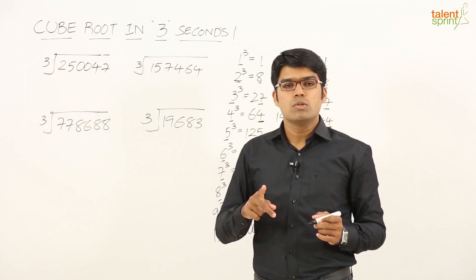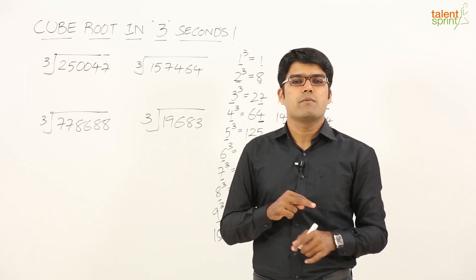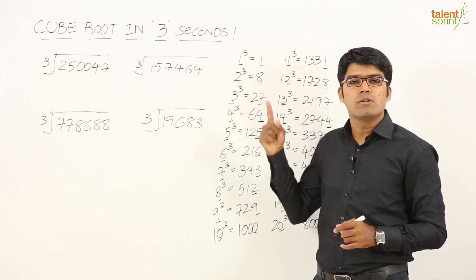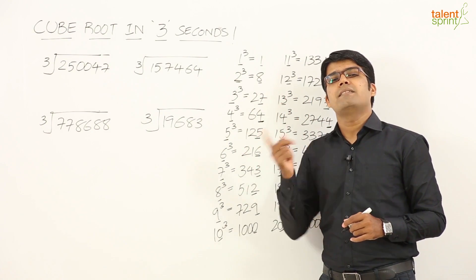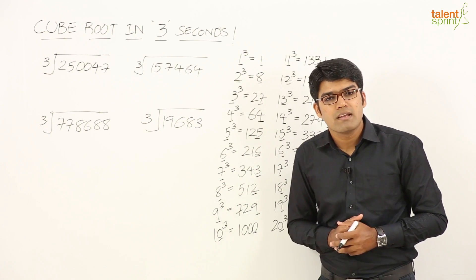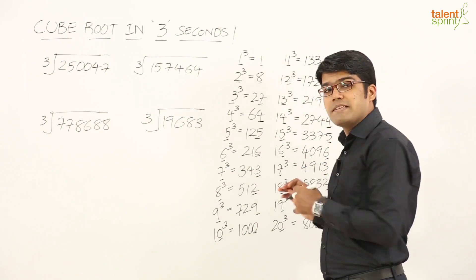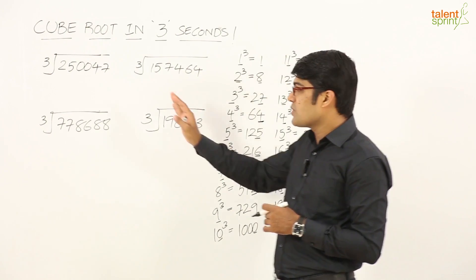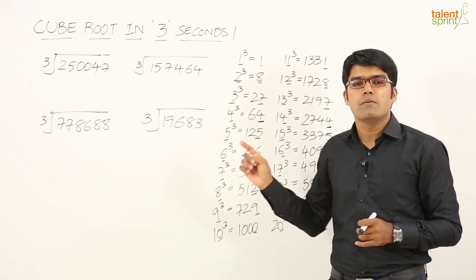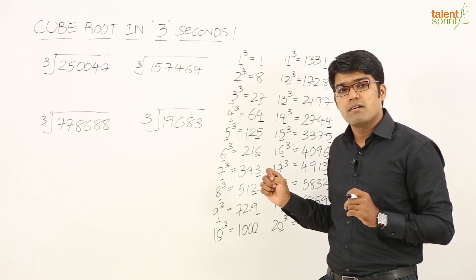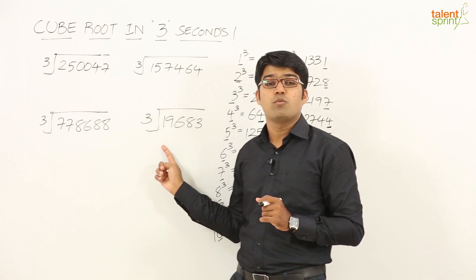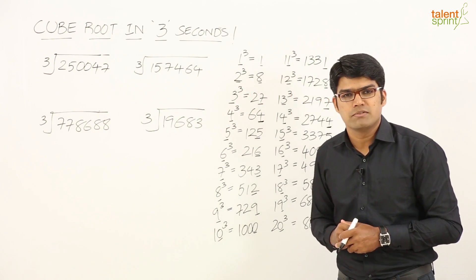To summarize: when a number ends in 2, the cube root ends in 8 and vice versa. Same is the case with 3 and 7 — if a number ends in 3, the cube root ends in 7, and if it ends in 7, the cube root ends in 3. For all remaining digits, the units digit remains the same. Now that we've learned this units place pattern, let us solve a few questions. Note that all the given numbers are perfect cubes.